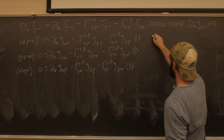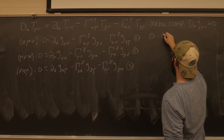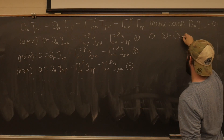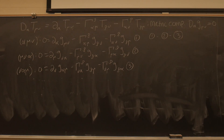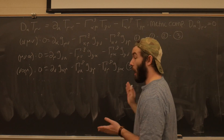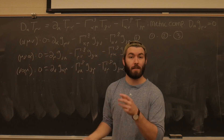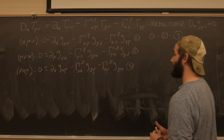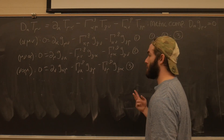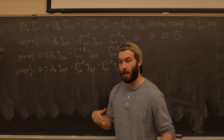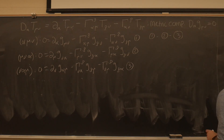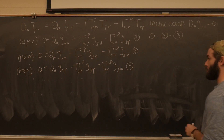We're going to take 1 minus 2 minus 3. This is the conventional way of coming up with these Christoffel symbols. I don't know how they figured out to take these orders of indices. The book does it a little bit different — actually they define it twice in different chapters — but it all amounts to the same thing. This is how I learned it, so this is how I'm teaching it. So we take this difference of equations.